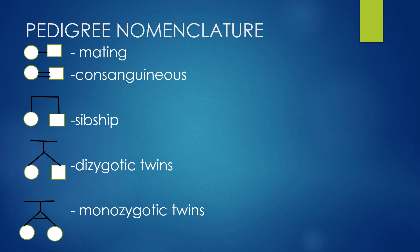The next symbol is sibship, represented by a square or circle. Pay attention to how the outline is drawn — you have two vertical lines linked together by a horizontal line, not linked by a straight line like the married couple symbol. For dizygotic twins and monozygotic twins, they look very similar, but dizygotic twins have no horizontal line between them whereas monozygotic twins clearly show one. Pay attention to differentiate between monozygotic and dizygotic twins.